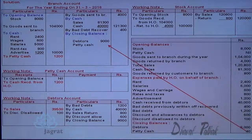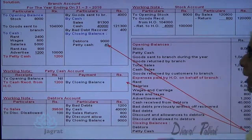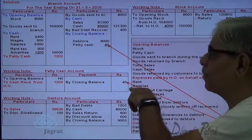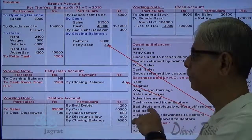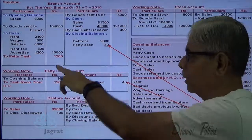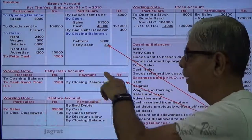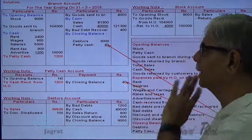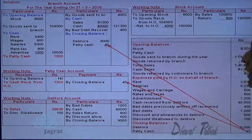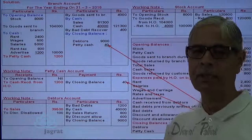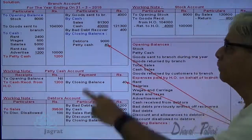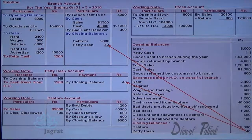Petty cash closing balance will also appear on the payment side of the petty cash account. The petty cash is absorbed by the head office at the end of the year, so branch account is credited for that.